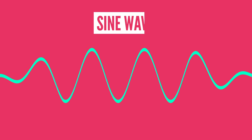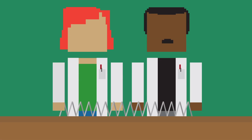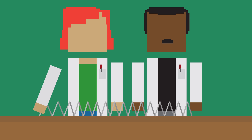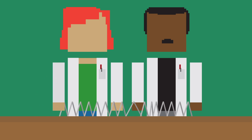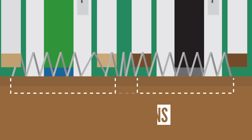These pressure variations can be modeled by a sine wave, where the peaks represent increased pressure and the troughs represent decreased pressure. To visualize that, let's think of a slinky. If you and your friend hold the ends and you move your hand back and forth, the areas where the slinky is compressed represent areas of increased pressure, called compressions, and the areas where the slinky is stretched represent areas of decreased pressure, called rarefactions.